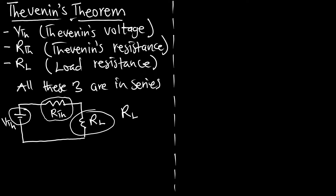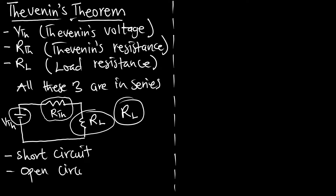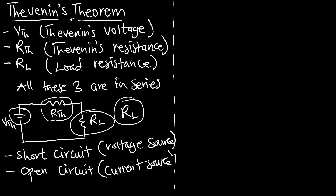RL is always known — it will always be known because the question is going to tell us. We are going to use what we call short circuit, and we are also going to use what we call open circuits. In a situation where we want to short circuit, that is going to be for a voltage source. If we talk about open circuit, then it is going to be a current source.